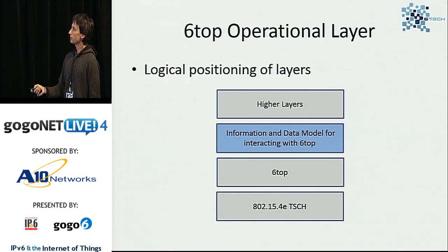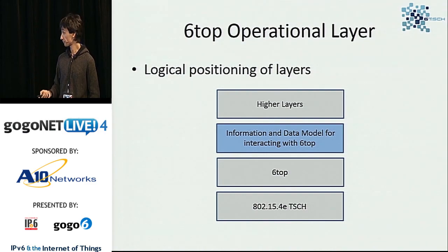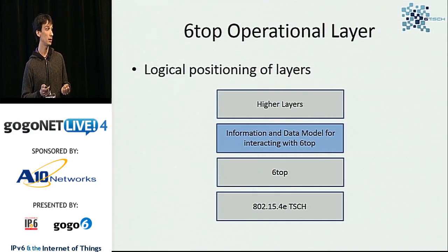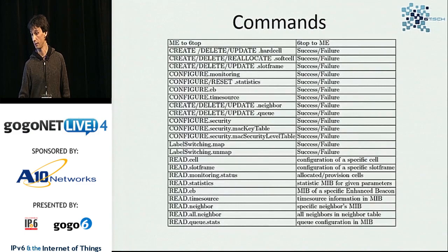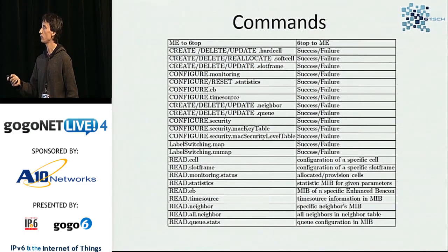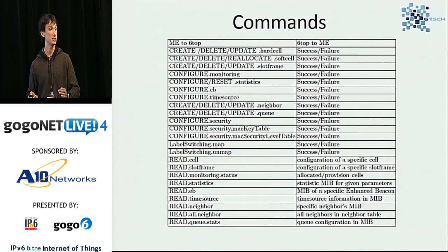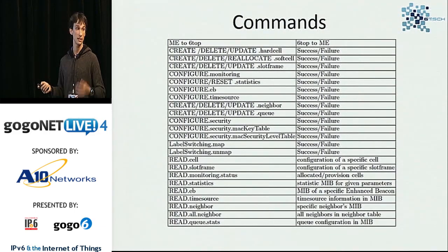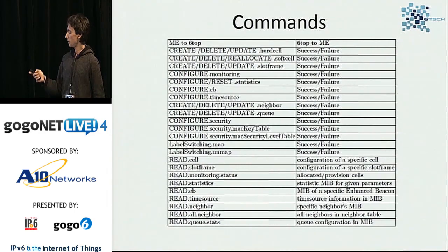To support both centralized and distributed operations, we define a 6top layer. 6top is a management layer sitting on top of 15.4E and under higher layers like 6LoWPAN. It will handle the information and data models we define — carrying information through the network and converting packets into operations and configuration for the 15.4E MAC layer. The initial set of commands includes creating, updating, or deleting a cell, distinguishing hard cells and soft cells, and configuring the enhanced beacon so the network advertises itself for new nodes to join.